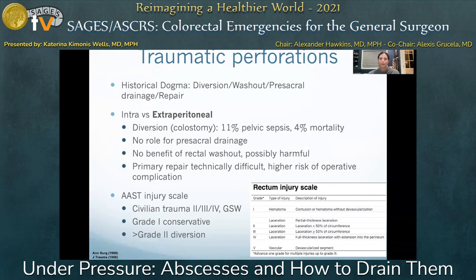Rectal trauma is another area where management of pelvic abscess has changed over the past several decades. Historically, treatment followed a dogma of diversion, rectal washout, presacral drainage, and direct repair. Most current literature supports diversion alone, with a fairly low rate of pelvic sepsis and mortality. Presacral drainage does not reduce pelvic sepsis rates and presents significant morbidity. Rectal washout also does not reduce pelvic sepsis rates and may be harmful by introducing infection into previously uninfected areas through hydrodissection of traumatized tissue.